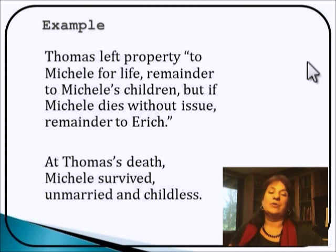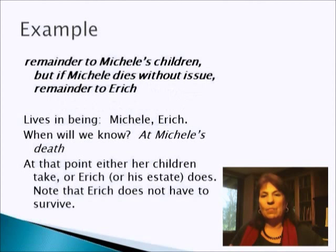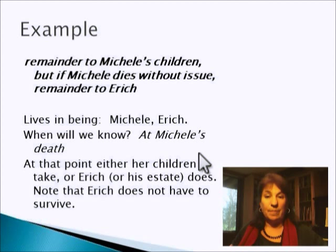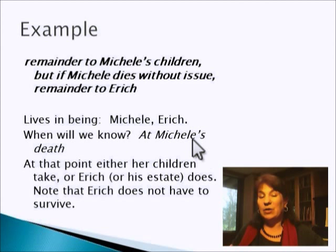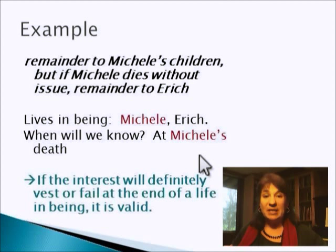Thomas left property to Michelle for life, remainder to Michelle's children. But if Michelle dies without issue, remainder to Eric. And at Thomas's death, Michelle did survive unmarried and childless, and so did Eric. Who are the lives in being? Michelle, Eric. When will we know who takes this remainder — either Michelle's children or Eric or his estate? We will know for sure at Michelle's death, because at that point either her children take or Eric does. There aren't any other options. Notice that Eric does not actually have to survive in this case. But we'll know at Michelle's death. If the interest will definitely vest or fail at the end of a life in being, it is valid.